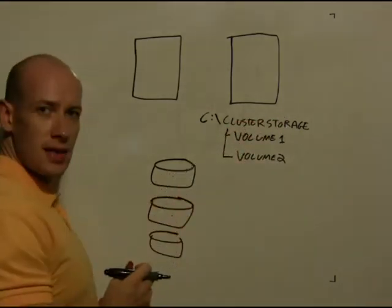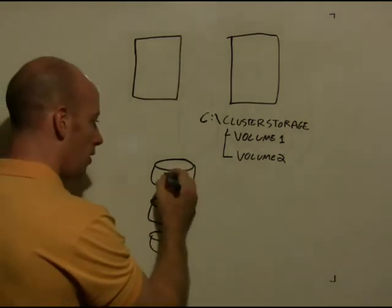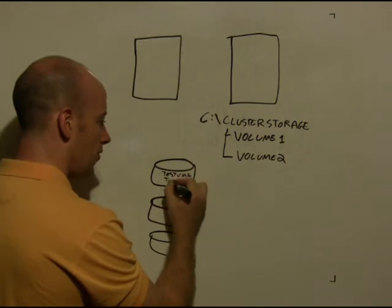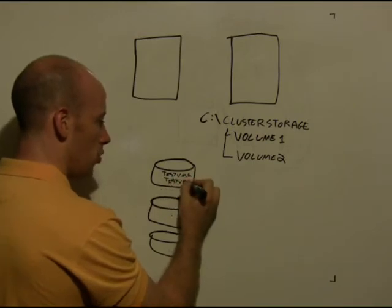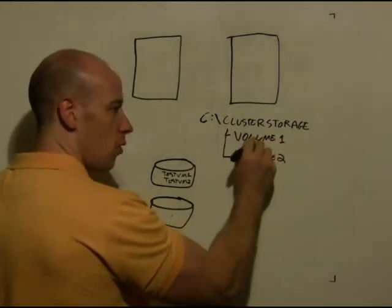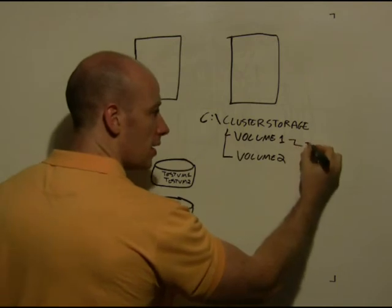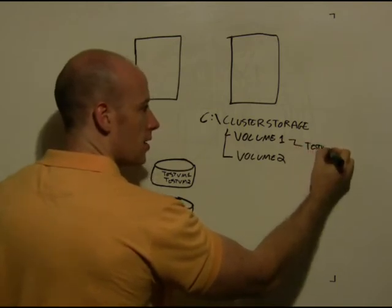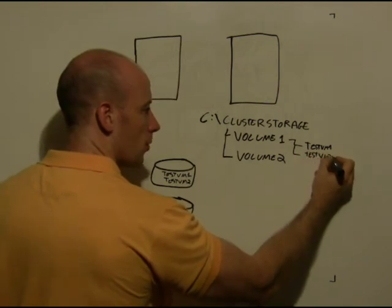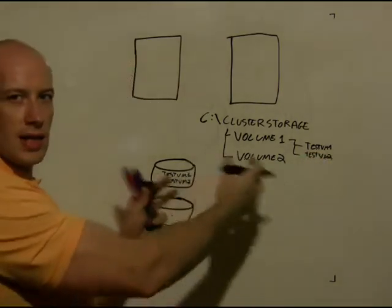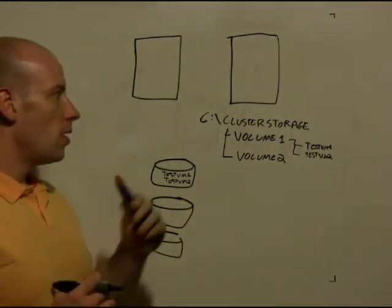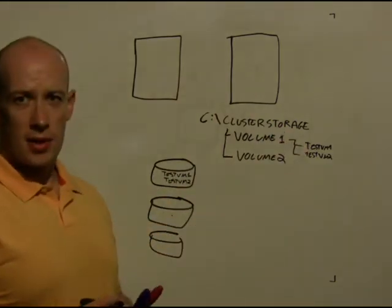If on this disk I had a folder called testvm1 and testvm2, when I look at cluster storage as child folders of volume one, I will see testvm1, testvm2. So it's just linking to the file system that I have here. And again, both of these nodes can access it at the same time.